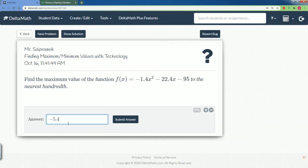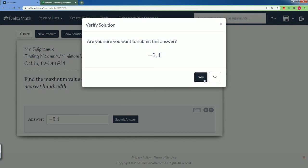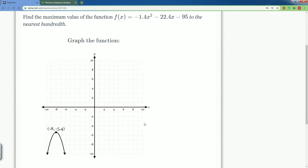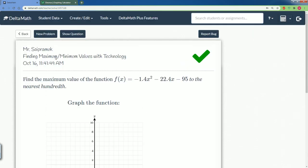So here it just be negative 5.4. Hit submit, that is our answer. Good job. All right, so that's all you need to know, how to do to find the maximum and minimum with technology.